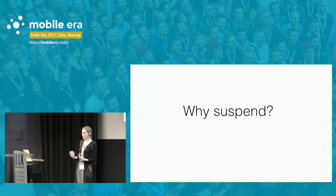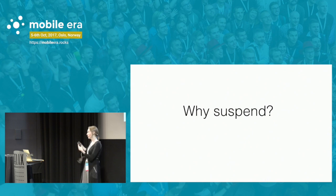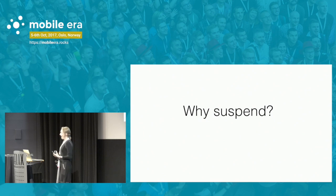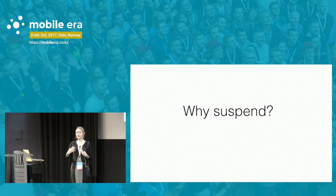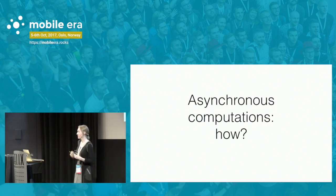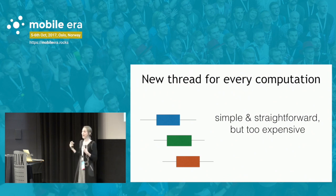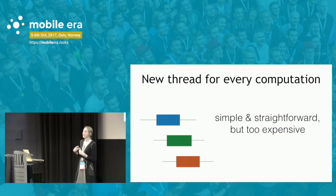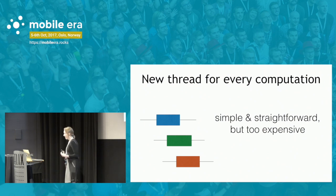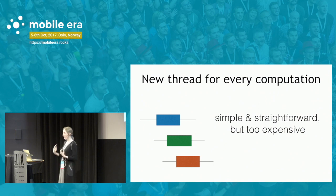You might wonder: why would we want to suspend a computation — take it and put it away from a thread? To answer this, let's discuss how asynchronous computations can be done in general. The first naive approach is to create a new thread for every computation. It's very simple and straightforward, and works for prototyping or situations where performance doesn't matter. However, it's too expensive.